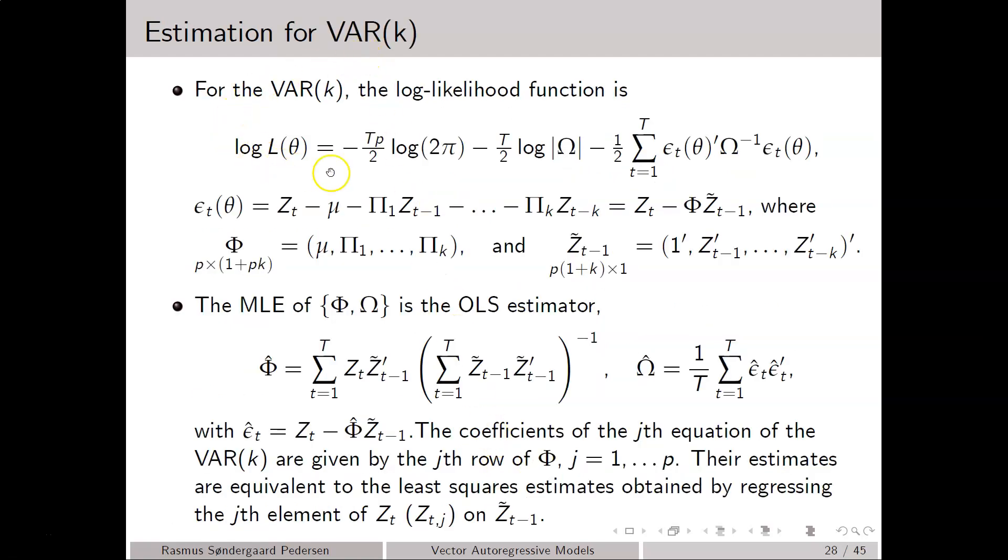So for the VAR(k) model, we have exactly the same kind of expression for the log-likelihood function. Now, epsilon_T is again given by Z_T minus its conditional expectation. So here we have k lags because it's a VAR(k) model.